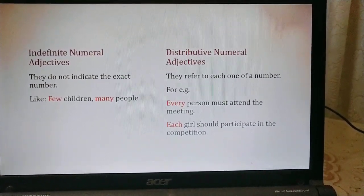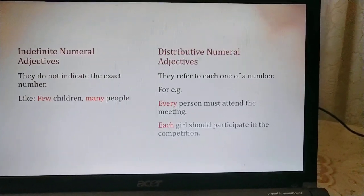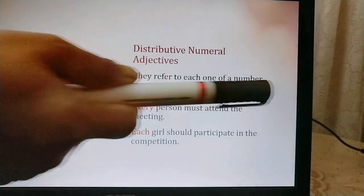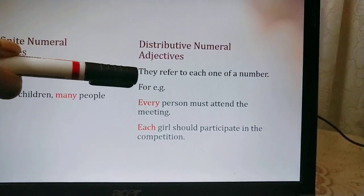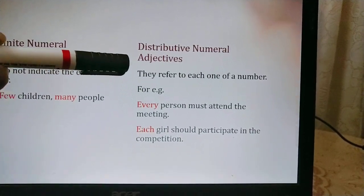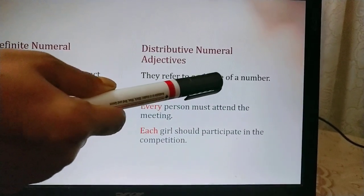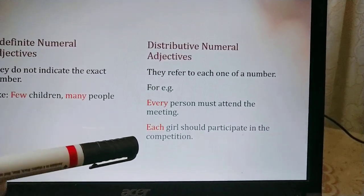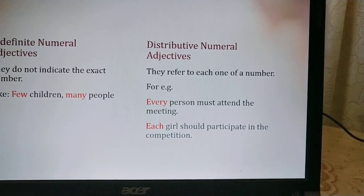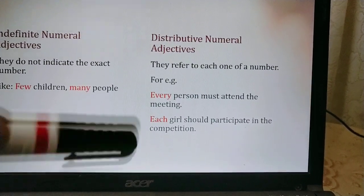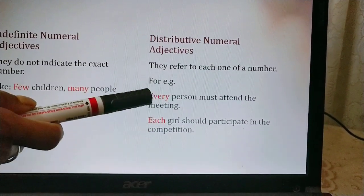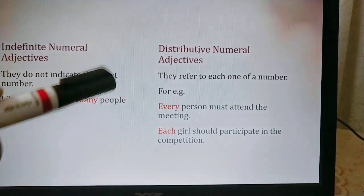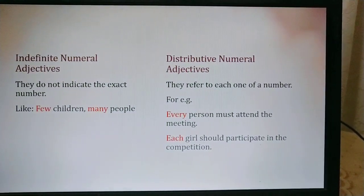When talking about the last one — distributive numeral adjective — they refer to each one of a number. 'Each' is self-explanatory: 'Each girl should participate in the competition' means everyone, not one can be missed. 'Every person must attend the meeting' means nobody can escape — everybody has to participate. This is the distributive numeral adjective.